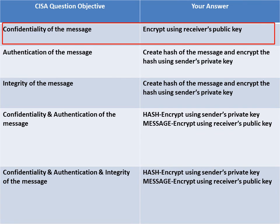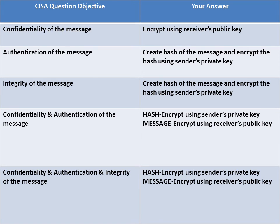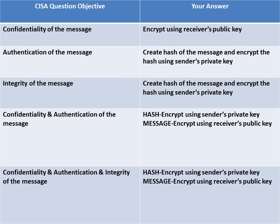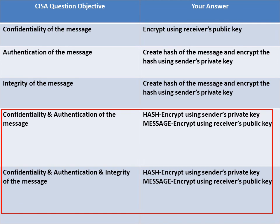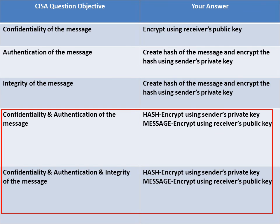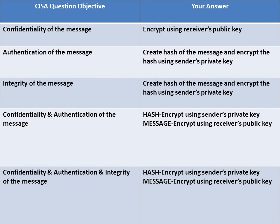Final recap: if the objective is confidentiality, encrypt using the receiver's public key. If the objective is authentication or integrity, create a hash of the message and encrypt the hash using the sender's private key, because the sender's private key is something unique. If the objective includes both confidentiality and authentication — or confidentiality, authentication, and integrity — the answer involves two factors: the hash encrypted using the sender's private key, and the full message encrypted using the receiver's public key.